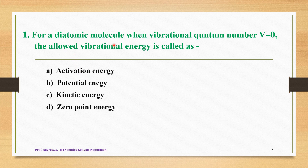Question 1: For a diatomic molecule, when vibrational quantum number V is equal to 0, the allowed vibrational energy is called as — option A: activation energy, option B: potential energy, option C: kinetic energy, option D: zero point energy. The correct answer is option D — it is called as the zero point energy.